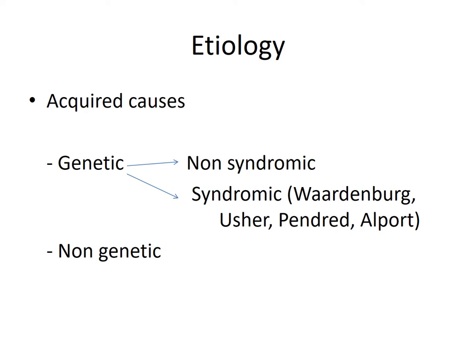The acquired causes of sensorineural hearing loss can be divided into genetic and non-genetic causes. Genetic causes are further divided into non-syndromic — where hearing loss runs in families but only hearing is affected with no other system involved — and syndromic, where there are many syndromes associated with hearing loss and involvement of other parts of the body. Examples include Waardenburg, Usher syndrome, Pendred syndrome, and Alport syndrome.